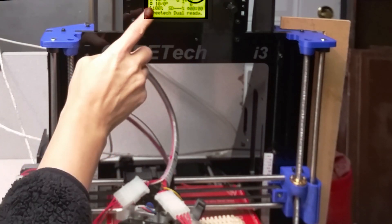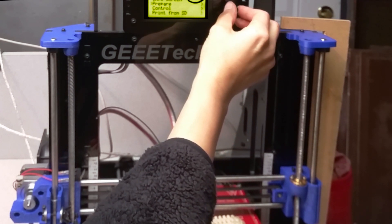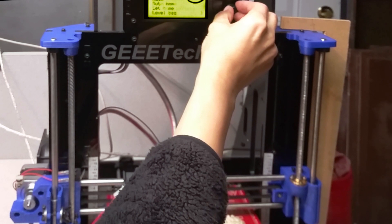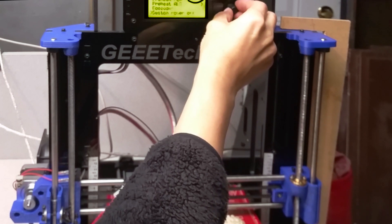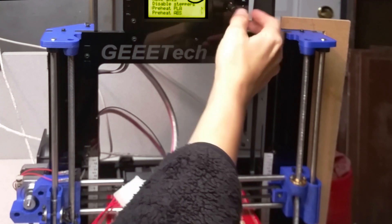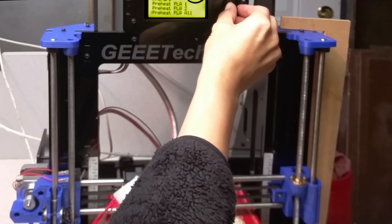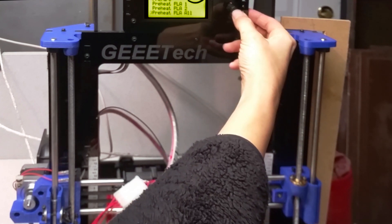There might not be enough dynamic range to read this, but I'm going to go into the menu here and I'm going to click on prepare, and I'm going to preheat PLA, which most of this is PLA. And I'm going to click on preheat PLA all.